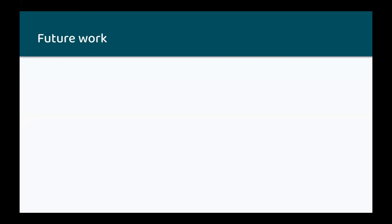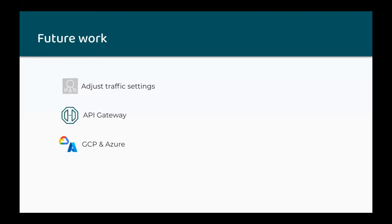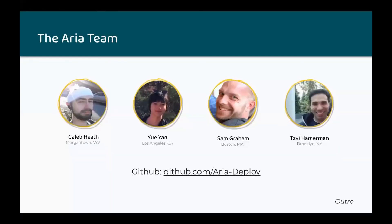We're proud of what we built with ARIA. However, there are certain areas that we would like to add support for in the future. First is the ability to increase and decrease existing canary traffic. Currently, users can set how much traffic a canary receives only in the initial deployment. We would like to add the ability to adjust the traffic of an existing canary. Second, many applications that implement microservices use an API gateway. An API gateway sits in front of a user's microservice application and forwards traffic to the proper destination. We would like to support those applications that use an API gateway. Third and last, ARIA currently works with applications deployed with AWS. We would like to add support for other cloud providers like Microsoft Azure and Google Cloud. That's the end of our talk. Thank you for coming. Here is the team that built ARIA.